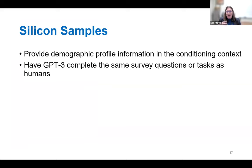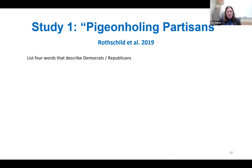We also developed a method called silicon sampling: we provide demographic background information in the conditioning text, and we want GPT-3 to complete the same survey questions or tasks as humans. We're replicating existing survey data, asking GPT-3 to simulate each one of the humans already in a survey sample. The first study replicates work called 'Pigeonholing Partisans' from Rothschild and others in 2019, where survey respondents listed four words describing Democrats and four words describing Republicans to study party stereotypes.